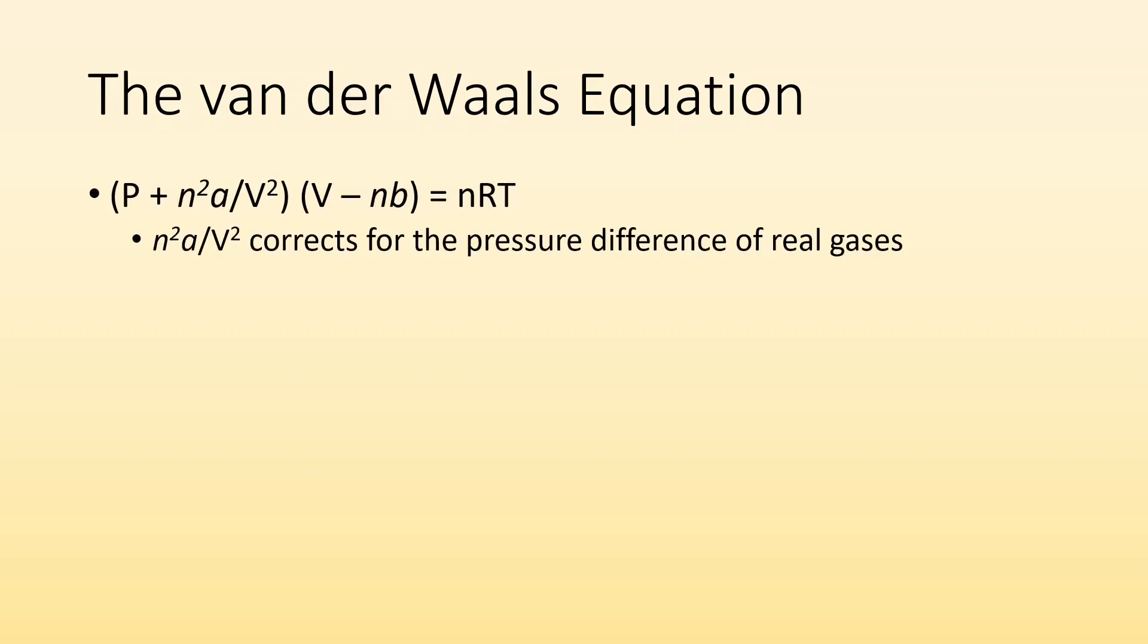This little section of the Van der Waals equation is accounting for the pressure difference of real gases compared to ideal gases. The pressure plus this value, we're accounting for the difference in pressure of real gases. The nb over here, we're correcting for the volume that real gases occupy.